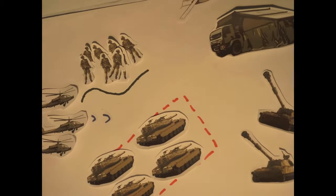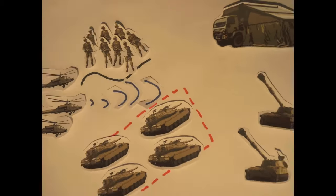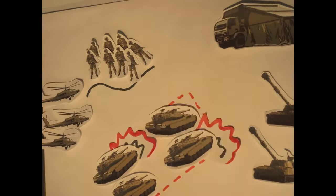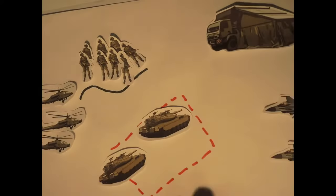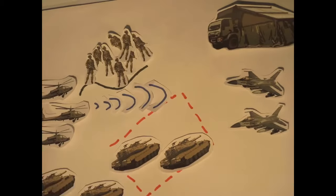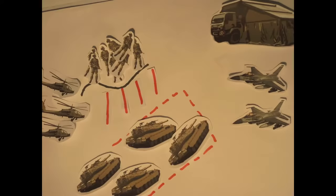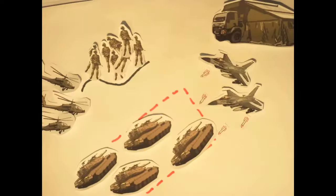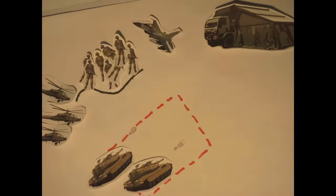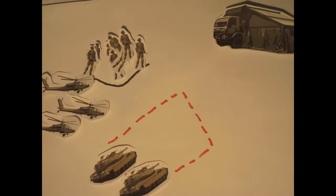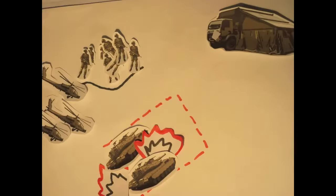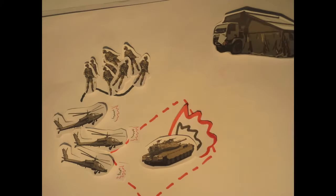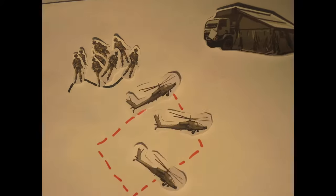The lead Apache designates the targets to the artillery guns. The F-16s are activated for an air strike. Laser-guided bombs home into the targets designated by the ground troops. The Apaches fire their missiles before moving closer to take out the remaining targets with their rockets and guns.